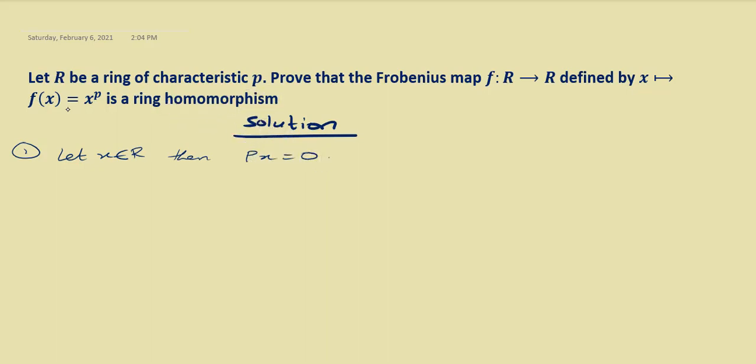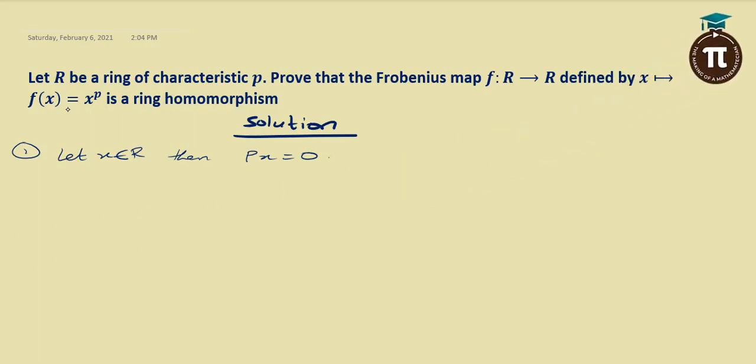Prove that the Frobenius map — that is, F map from R to R defined by F(X) = X raised to the power P — is a ring homomorphism.